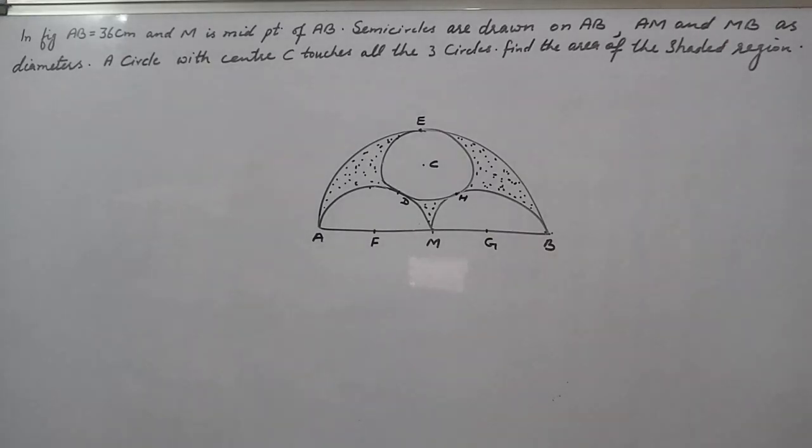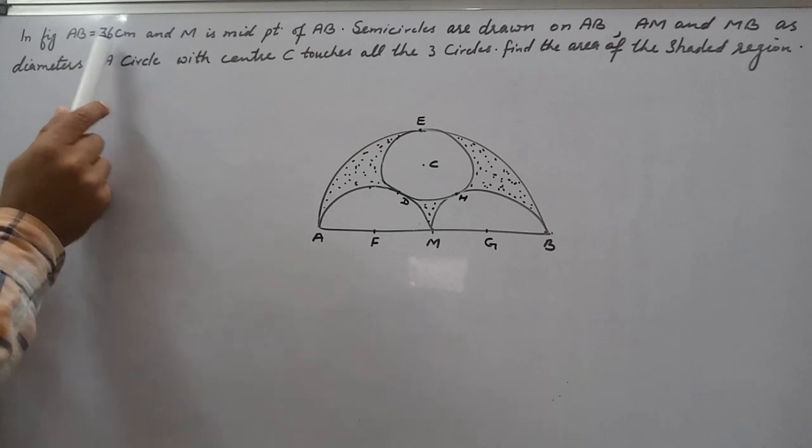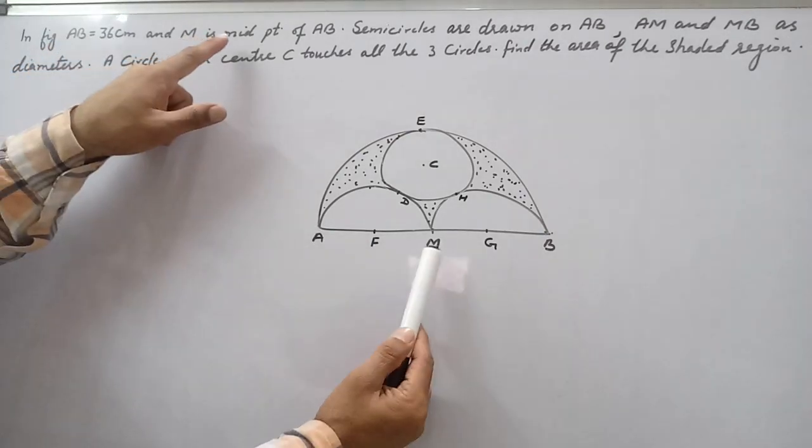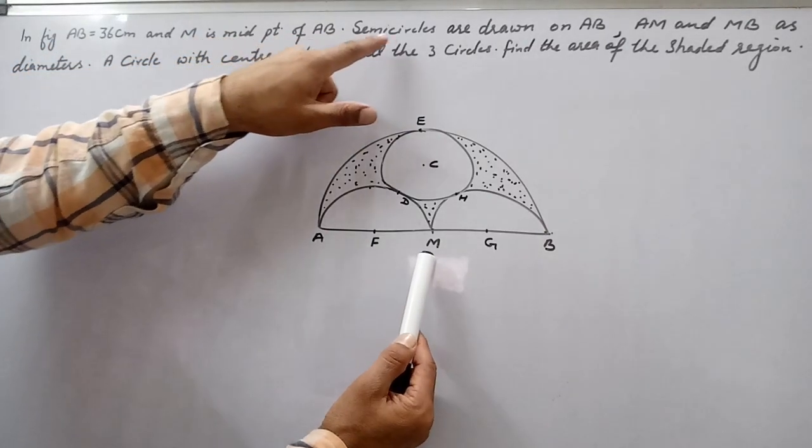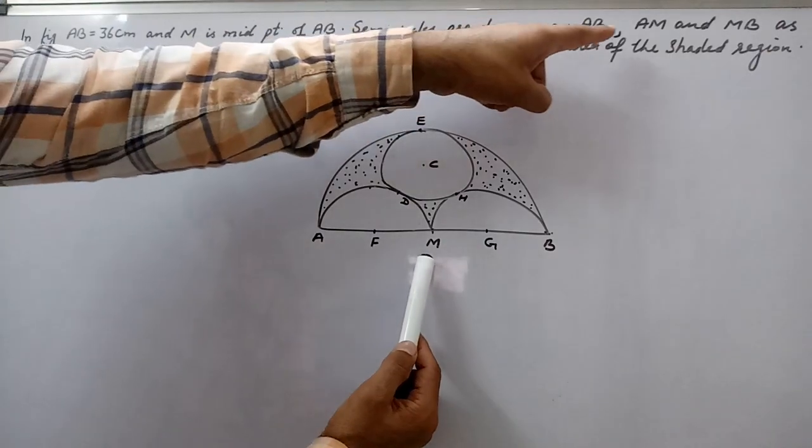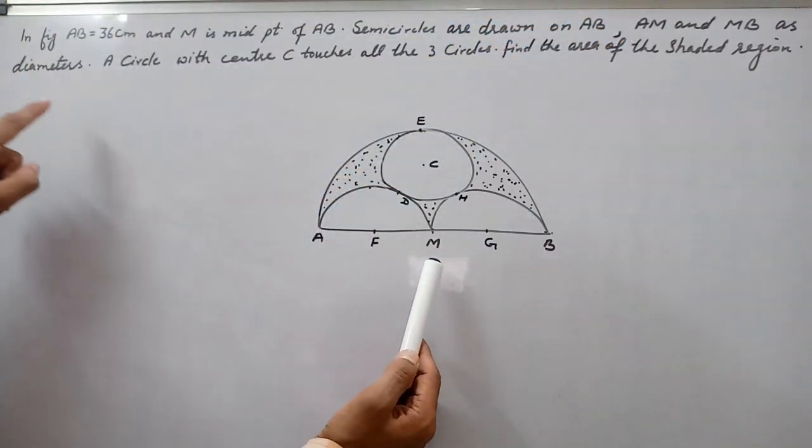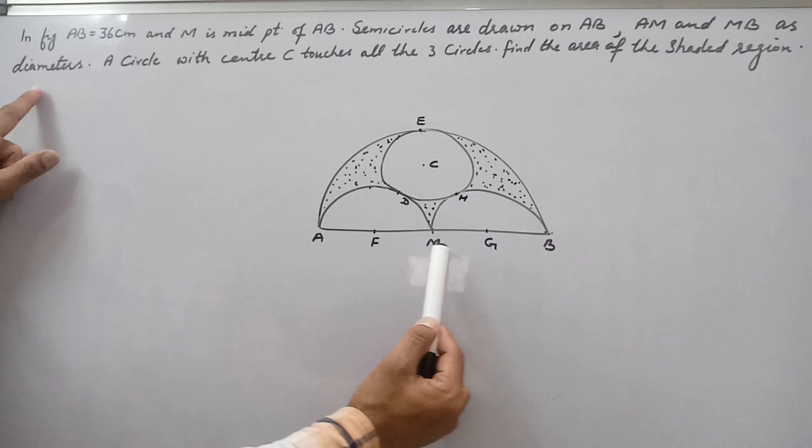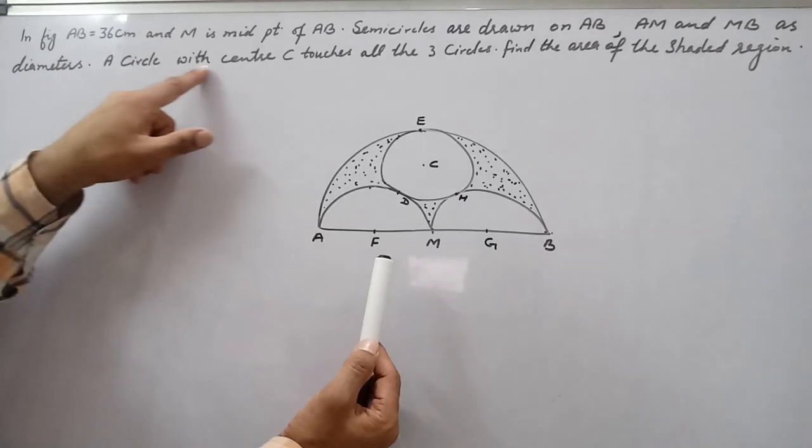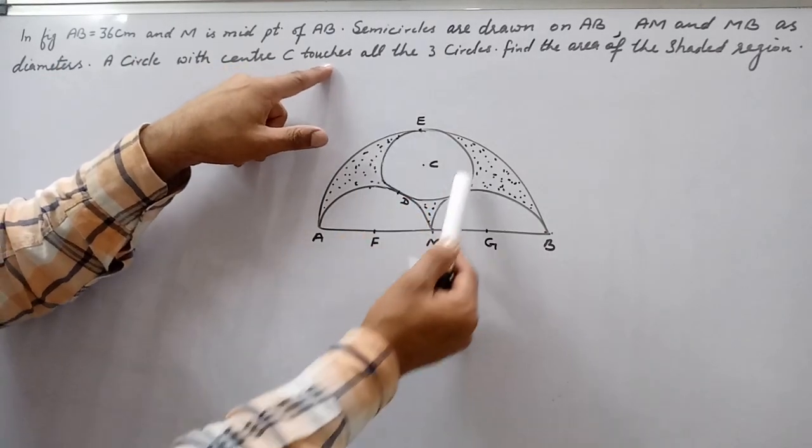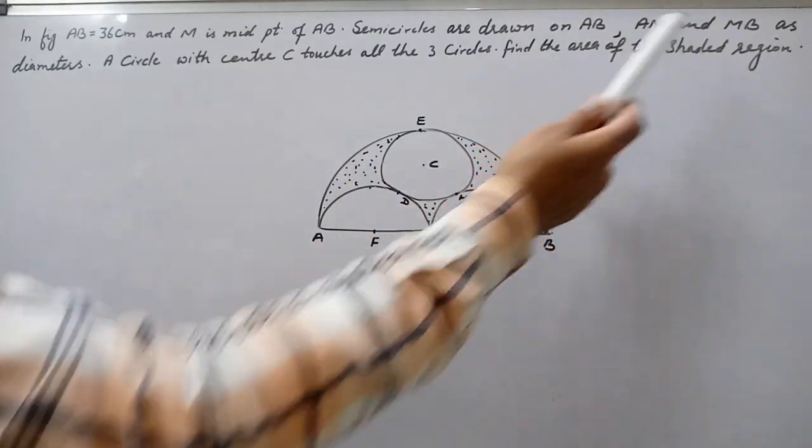Welcome to my YouTube channel. Let's solve this question. AB is 36 centimeters and M is the midpoint of AB. Semicircles are drawn on AB, AM, and MB as diameters. A circle with center C touches all three circles. Find the shaded area.